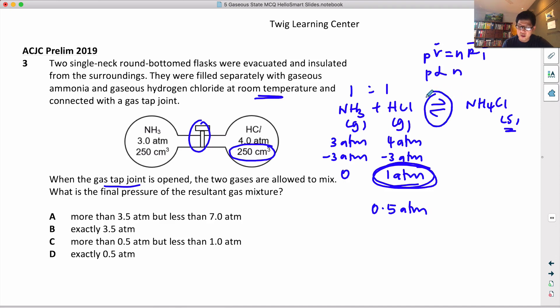But take note, this reaction is reversible, which means maybe not all the HCl - not 3 atm of HCl reacted, probably less of it reacted. So the answer has to be somewhere between these values.